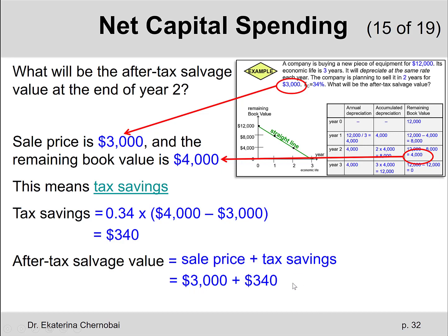So the after-tax salvage value equals $3,000 plus the tax savings of $340, which gives us $3,340.